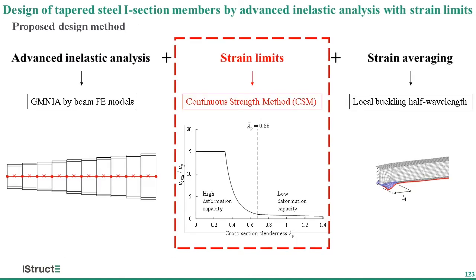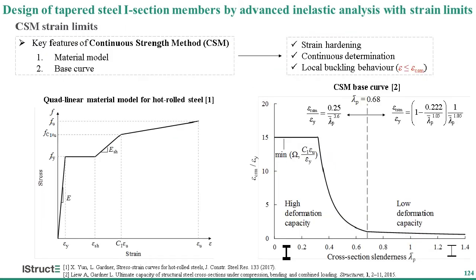The second part is CSM strain limits. The Continuous Strength Method, CSM, is a deformation-based approach to structural design. CSM has two key features. First is an appropriate material model: the quad-linear stress-strain model for hot-rolled steel, which allows for strain hardening and has been shown to provide accurate stress-strain response. The second key feature is the CSM base curve, which defines a continuous relationship between cross-section slenderness and the maximum strain a cross-section can experience prior to failure. Stocky and slender cross-sections have different deformation capacities, and thus can reach different maximum strains at failure. By applying the CSM strain limit to the maximum compressive strain within cross-sections, this method can determine the cross-section's ultimate state, and correspondingly, local buckling effects are accounted for.